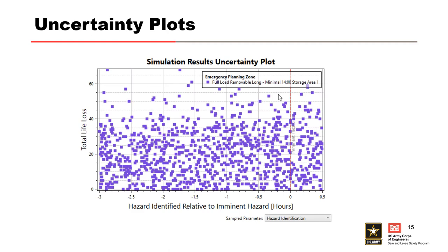Let me give a quick overview of correlation. Looking at this first plot, we don't see a strong correlation — there's no real trend in the data. On the y-axis we have total life loss; on the x-axis we're looking at the imminent hazard ID time relative to breach time. What this tells me is that as long as my uncertainty bounds range from a half hour after breach to three hours before breach — the possible window for identifying a looming hazard — it doesn't necessarily correlate with overall life loss.